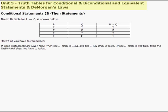We have our four different possibilities for P and Q: true-true, true-false, false-true, and false-false. Now the if-then statement is only false when the if part is true and the then part is false. So here we see false in that second row. All the other values are true.